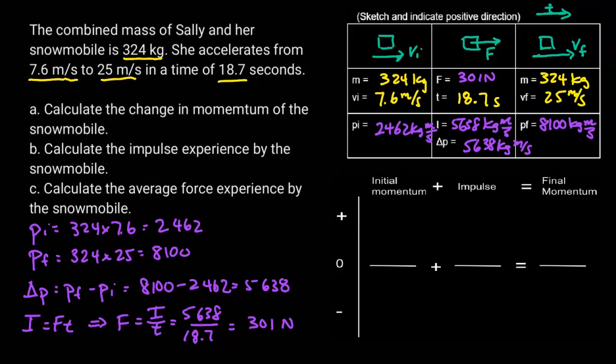Next, I'm going to do the bar chart. We start off with 2,462 kilogram meters per second of momentum. The impulse bar is a little more than double that. Then the final momentum bar, which combines those two, is going to be much bigger.